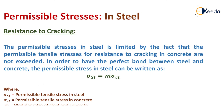Resistance to cracking in steel is limited by the fact that the permissible tensile stresses for resistance to cracking in concrete are not exceeded. In order to have perfect bond between the steel and concrete, the permissible stress in steel can be written as: Sigma_ST = m × Sigma_CT, where Sigma_ST is the permissible tensile stress in steel, Sigma_CT is the permissible tensile stress in concrete, and m is the modular ratio of steel to concrete.